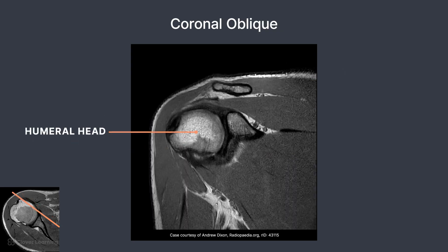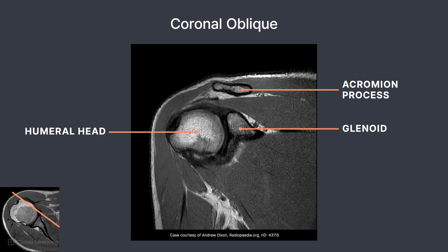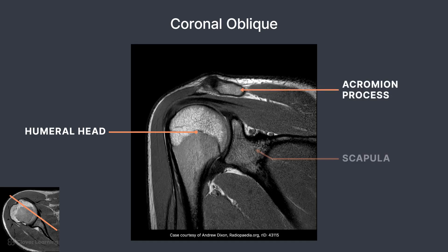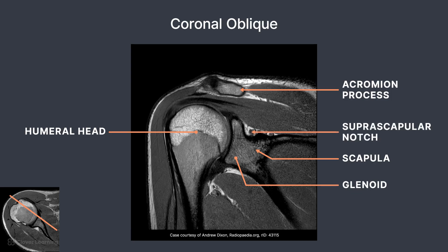Moving posteriorly, the humeral head begins to emerge, as well as the articulation with the glenoid portion of the scapula. Superiorly, the acromion process of the scapula is demonstrated. As the slices approach midline, there are several important structures to note. Bony structures visible include the humeral head, acromion, and scapula. Specific parts of the scapula visualized here include the glenoid and suprascapular notch.